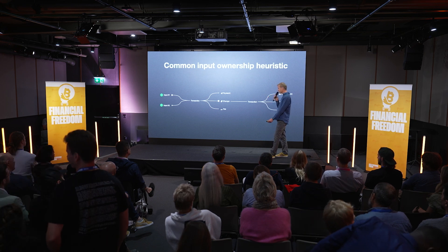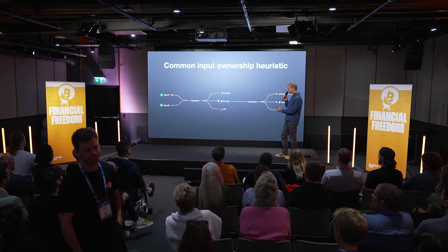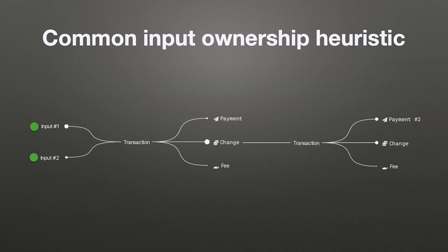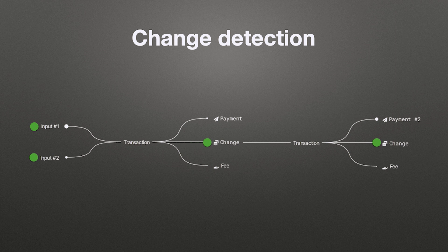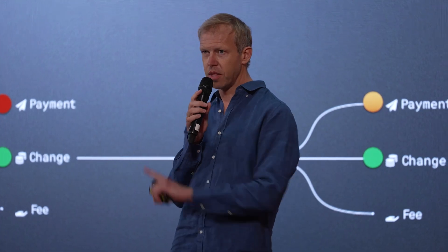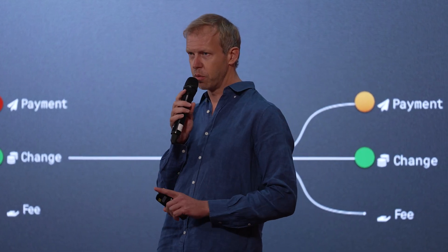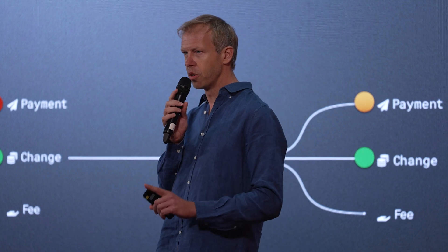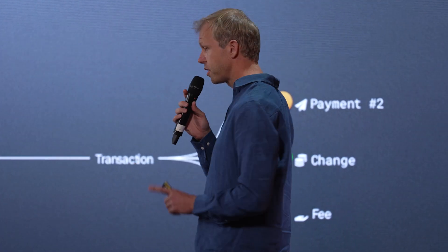As you can see, we've got those two green dots in our transaction graph. We can further try to determine which is the change output and which is the payment output. If we can accurately determine that, we can then further determine how these funds flow through the graph. When you look at that from the other perspective, what we are actually determining is where the change of ownership takes place — that's what blockchain analysis is really doing.